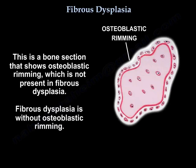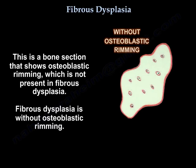This is a bone section that shows osteoblastic rimming, which is not present in fibrous dysplasia. Fibrous dysplasia is without osteoblastic rimming.